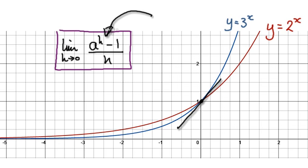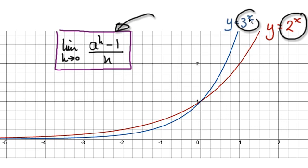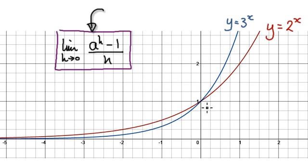So that's just another way of trying to understand this block. In this video, the example is y equals 2 to the power of x and y equals 3 to the power of x. This block in the case of the red line is the gradient at x equals 0 of the red line. For the blue line, this block is the gradient at x equals 0 for the blue line.